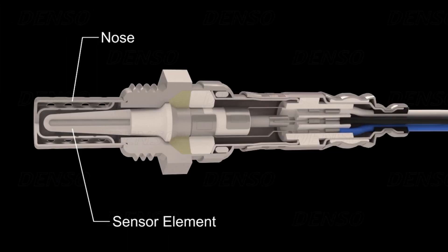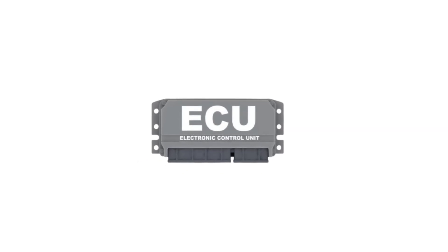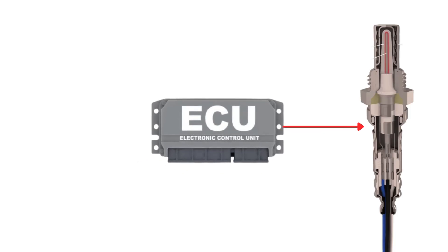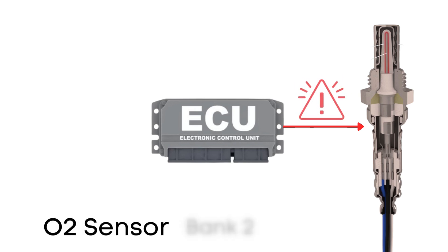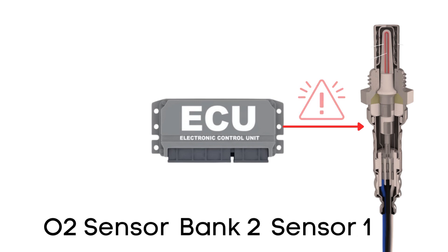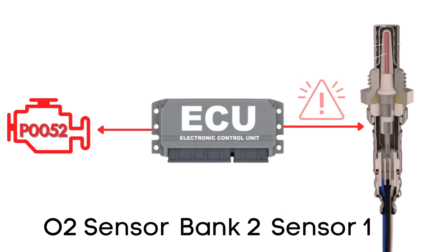That's where the heater circuit comes in. It's designed to warm up the sensor quickly so it starts working sooner. The ECU regularly checks the heater circuit in the oxygen sensor to ensure it's functioning correctly. If it finds that the voltage in the heater circuit for bank 2, sensor 1 is higher than expected, it will trigger the P0052 code.